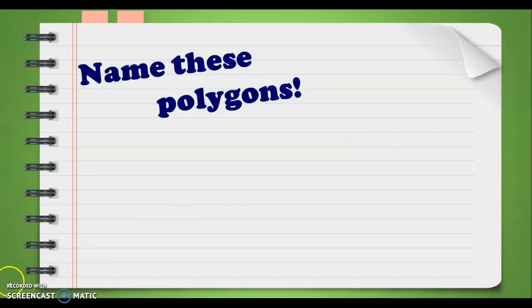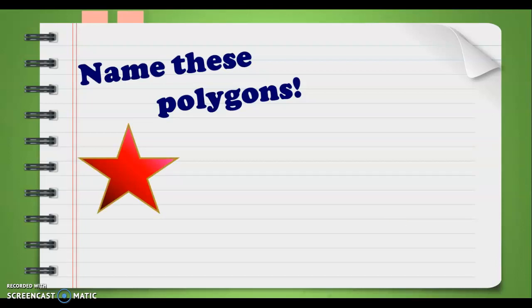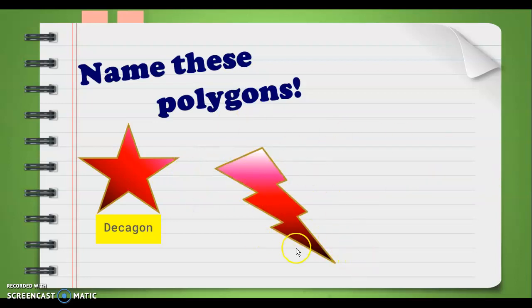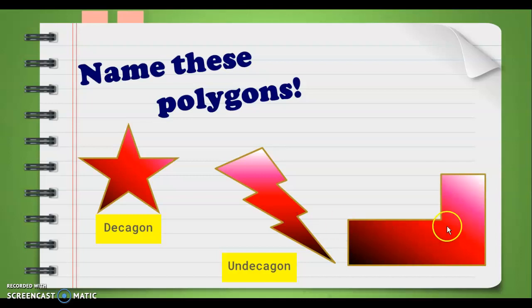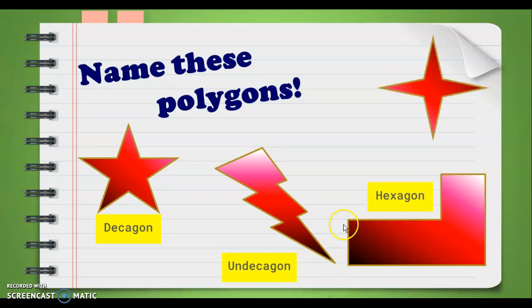Now let us try to name these polygons. First, this is a star — but what is its name according to the number of its sides? You are correct, it is called a decagon. This one is shaped like a thunder bolt and it is called an undecagon because it has eleven sides. This one may look like a letter L lying down and it is called a hexagon because it has six straight sides. Lastly, another star shape — it is called an octagon because it has eight straight sides.